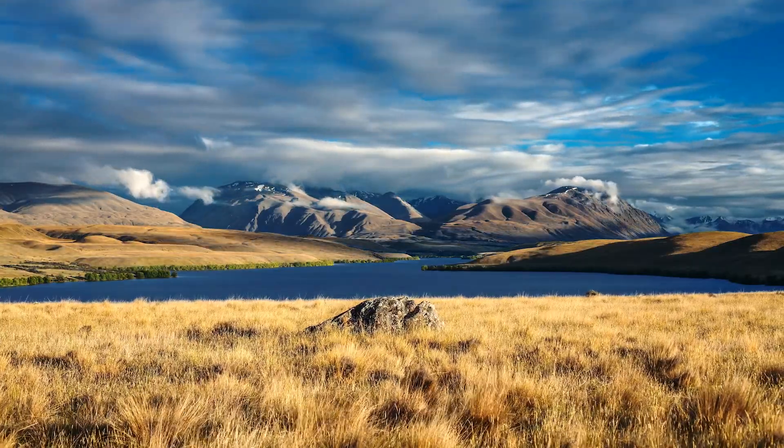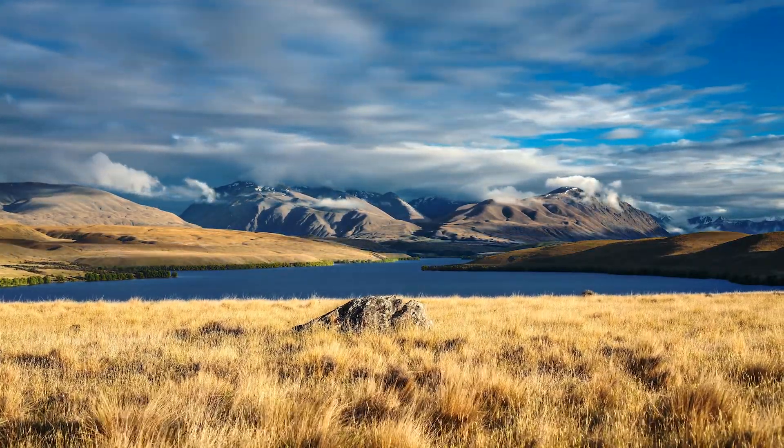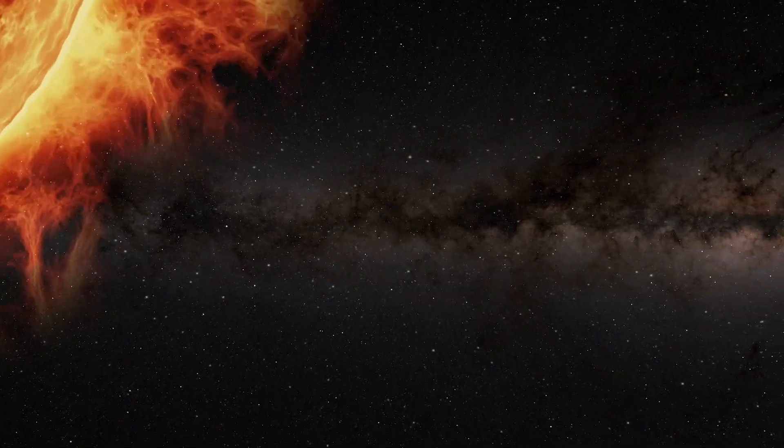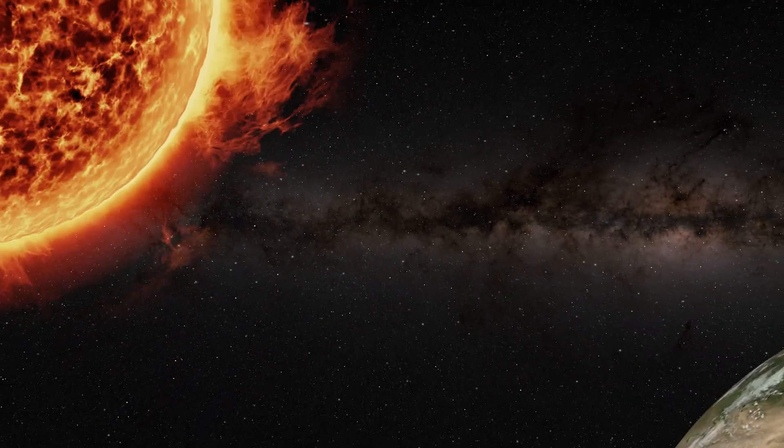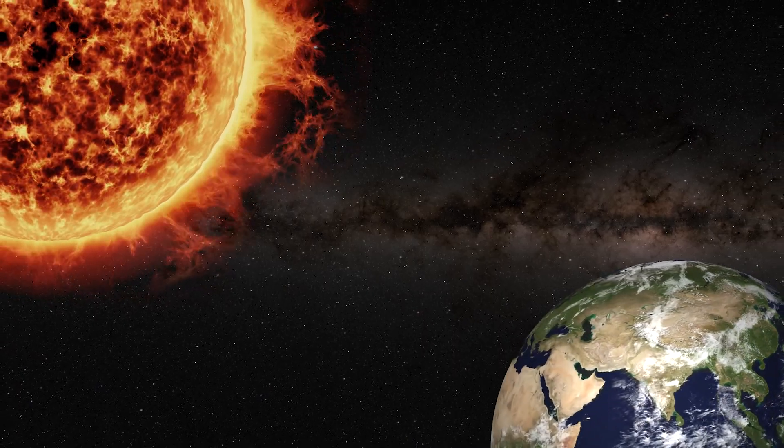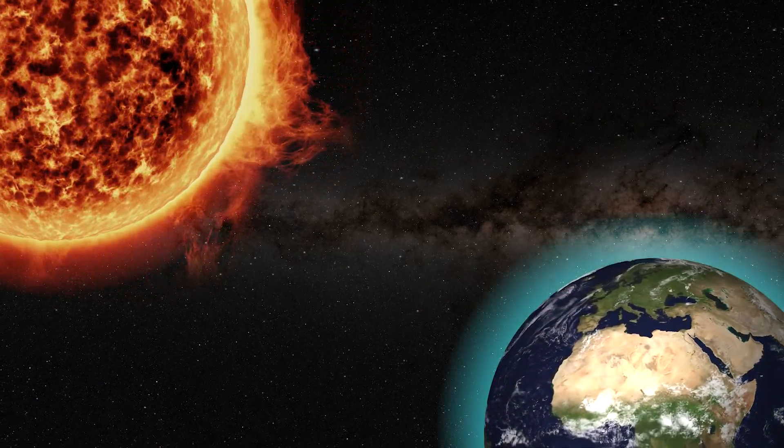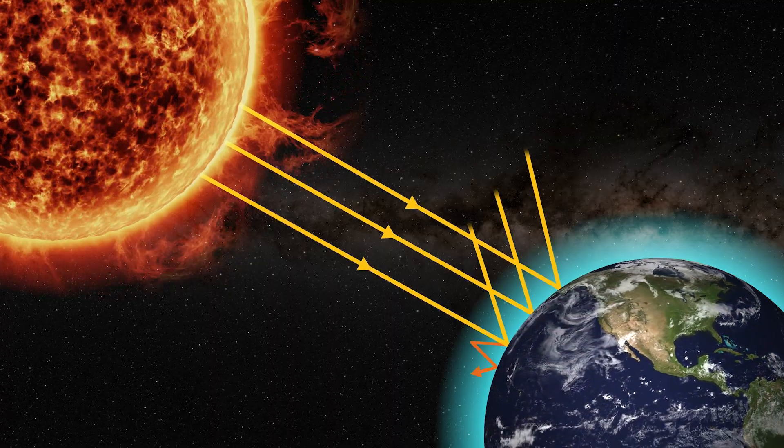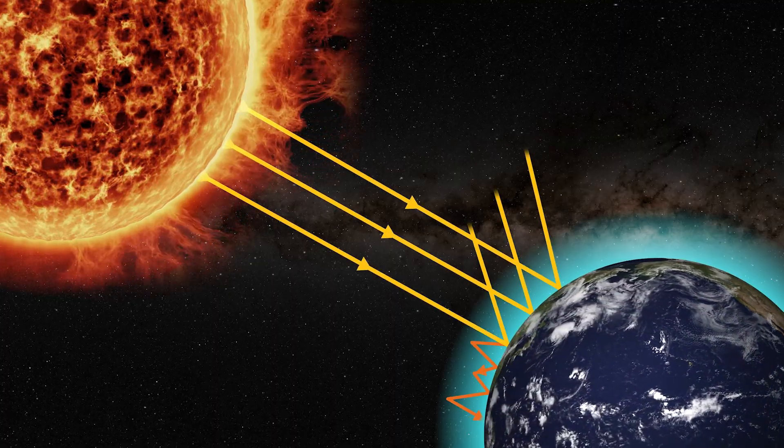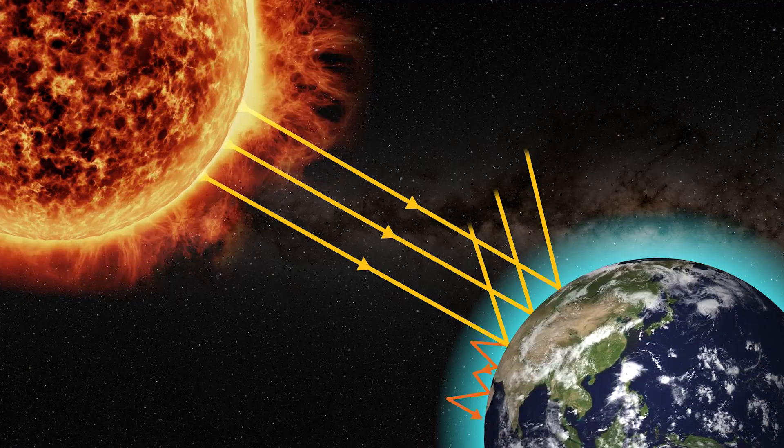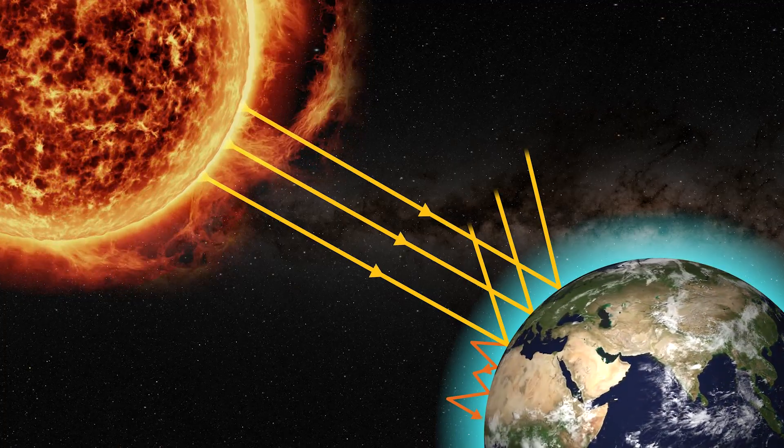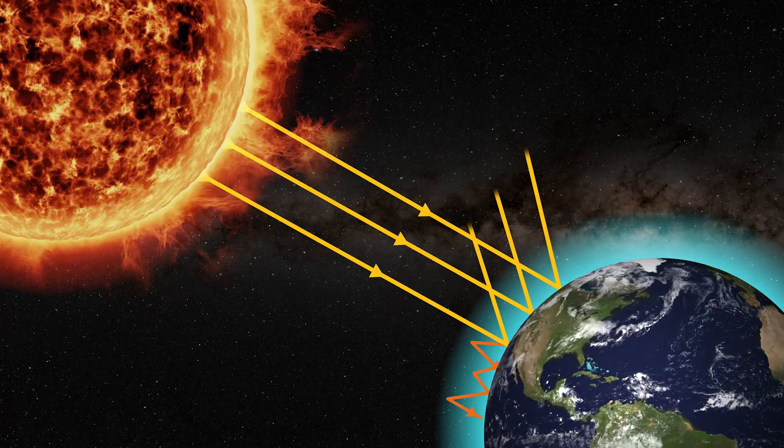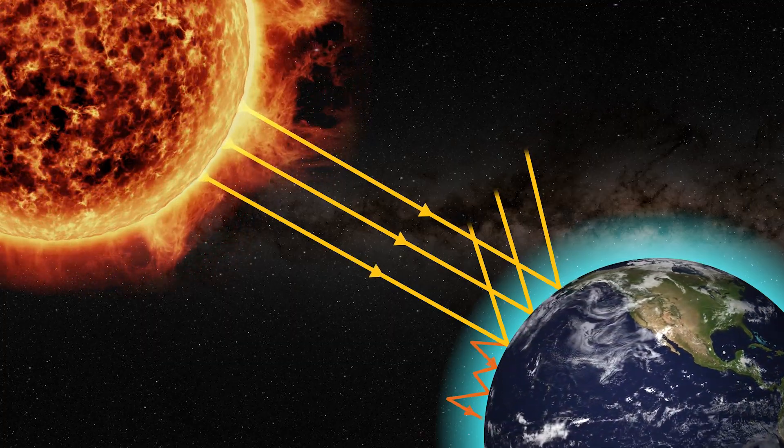Earth's atmosphere plays a significant role in maintaining this temperature range. It acts like a blanket, trapping some of the Sun's heat through a natural process known as the Greenhouse Effect. Without this effect, Earth's average temperature would be about minus 18 degrees Celsius, far too cold to sustain most forms of life. You can learn about the Greenhouse Effect in more detail in our related NG Science videos.